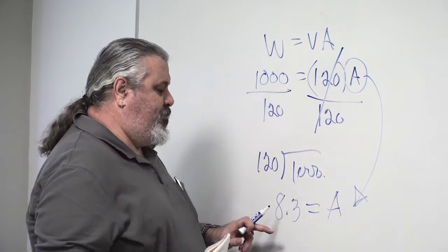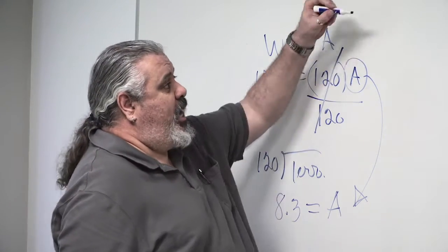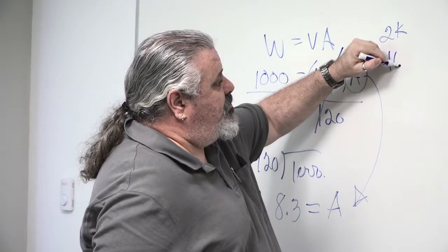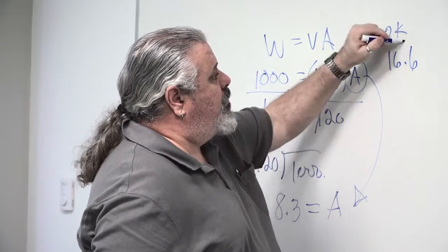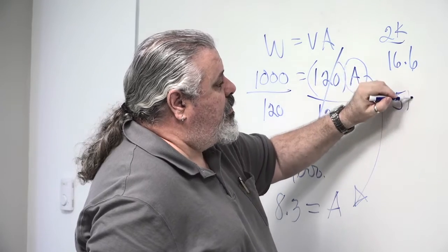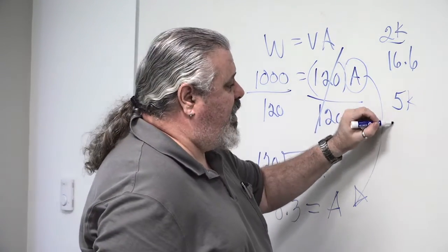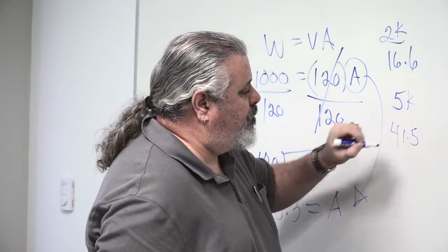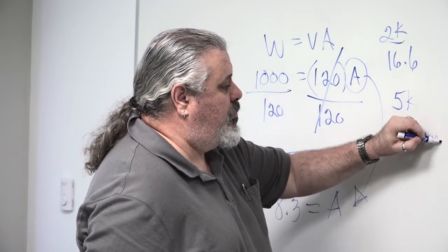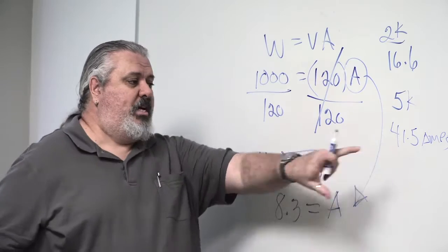So let me do that again where you can see. 8.3 times 2 for a 2k is 16.6, right? And a 5k, 5 times 8.3, 41.5 amps. So that's the answer.